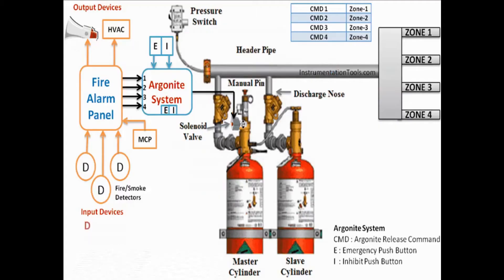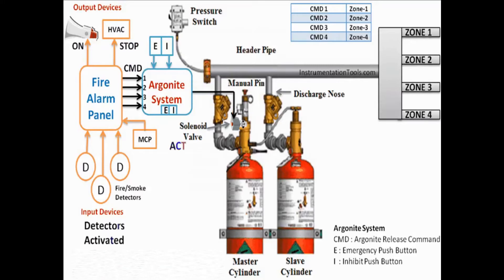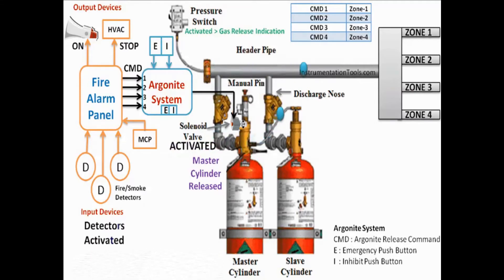Argonite System Operation: When any fire incident happens, fire and smoke detectors will be activated. These detectors give a signal to the fire alarm panel. The fire alarm panel activates the hooter and stops the HVAC unit. Also, the fire alarm panel sends an argonite release command to the argonite system.